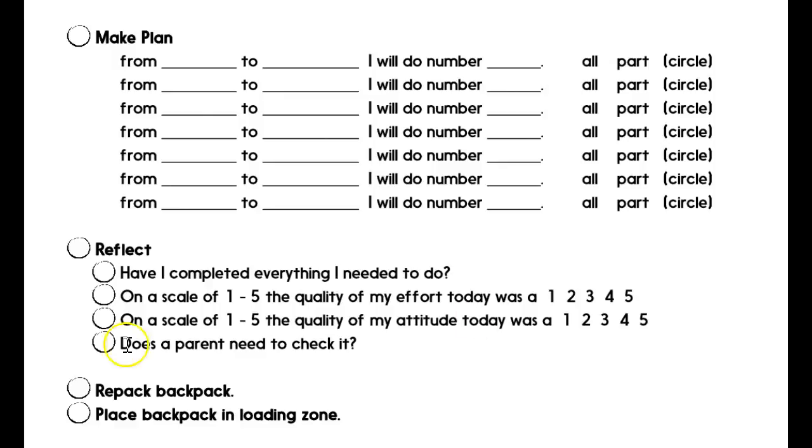Two tasks remain. Repack the backpack: put everything back in the backpack, check it off when it's done, and then place the backpack in a loading zone. The loading zone will be different for different families. It could be by the back door, back in the car, at the doorway to the room, or at the front door, wherever it is that they're going to see and grab it on their way to school. Wherever it needs to be so that it's ready to go to school the next day.